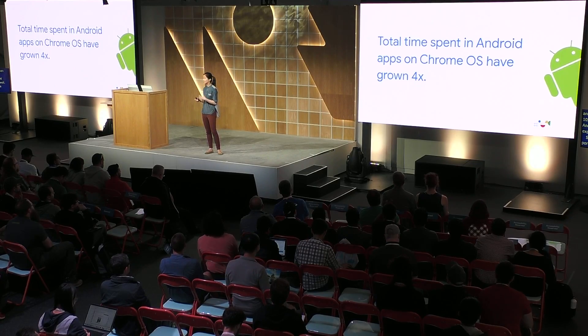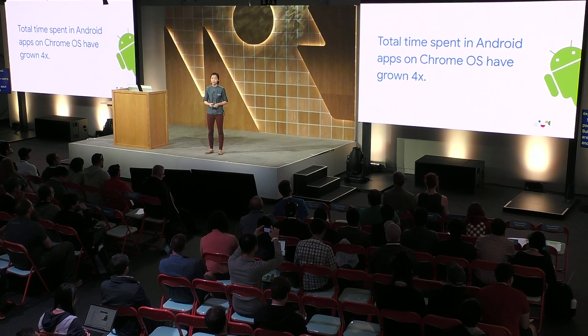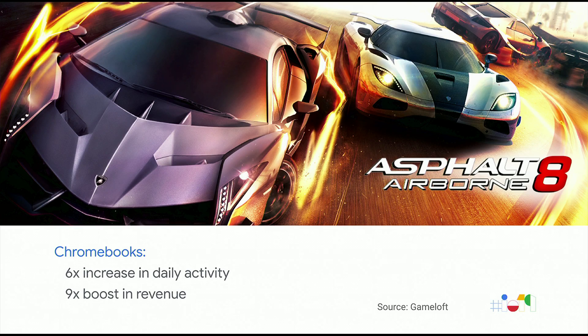We have our device portfolio, we have more users, and users are responding more to apps on Chrome OS. In the last year, app usage on Android on Chrome OS has grown by 4x. That's a testament to our growing app catalog and users finding more utility and better experiences. The first highlight is Asphalt 8, a racing car game. We worked with them to enhance the experience specifically around keyboard support and tablet mode. After these improvements, they've seen a 6x boost in daily activity and a 9x boost in app revenue.